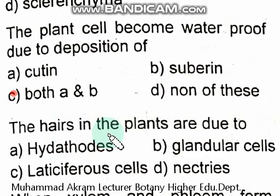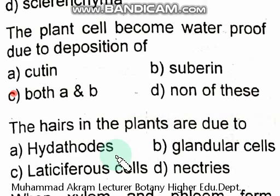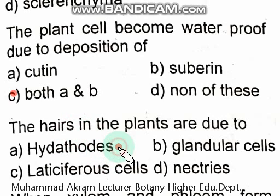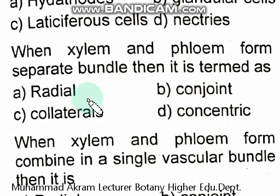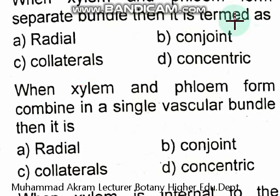The hairs in plants are due to trichomes — the right option is option A. When xylem and phloem form separate bundles then it is termed as radial — the right option is option A, radial.